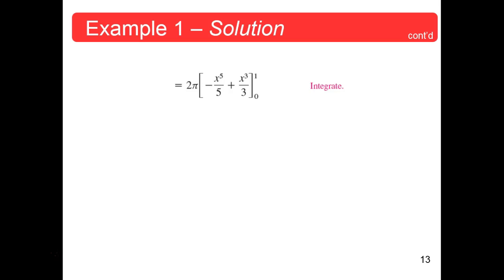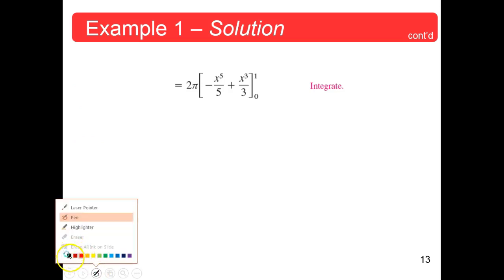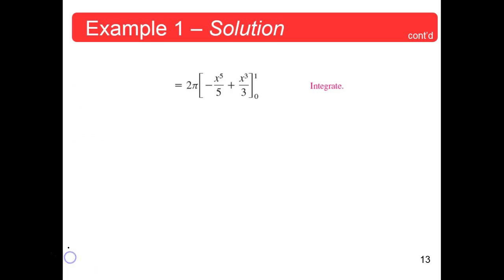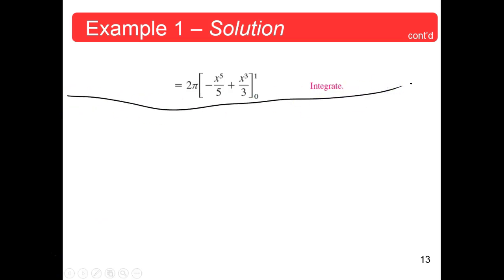Any questions on anything we've done up to now? We were in Chapter 7, Applications of Integration. 7.3 is volume, and we're doing the shell method now. We've done the disk method. And Example 2 is also using the shell method.